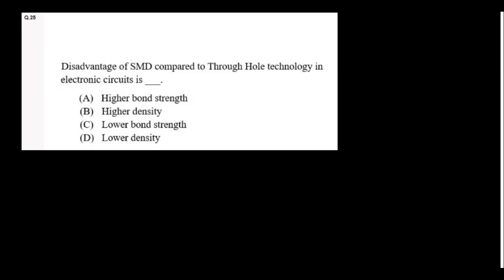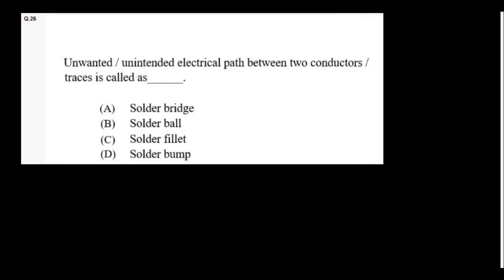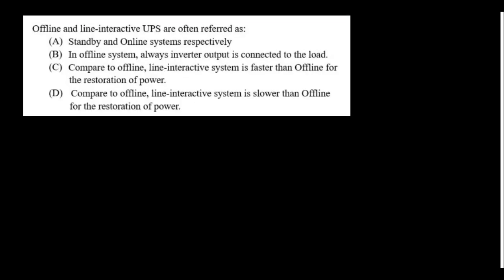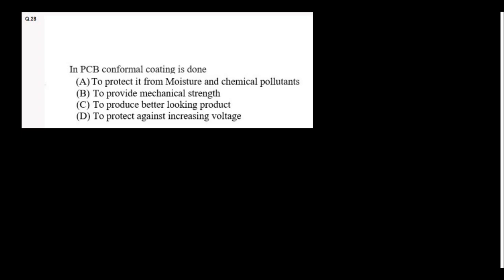Disadvantage of SMD compared to through-hole technology in electronic circuits: lower bond strength. Unwanted, unintended electrical path between two conductors trace is called the solder bridge. Offline and line interactive UPS: compared to offline, line interactive system is faster. So this is the answer. In PCB, conformal coating is done to protect it from moisture and chemical pollutants.